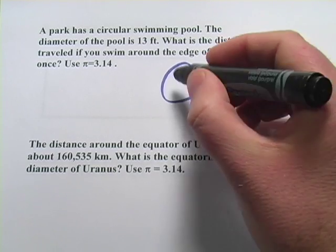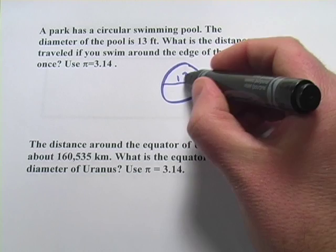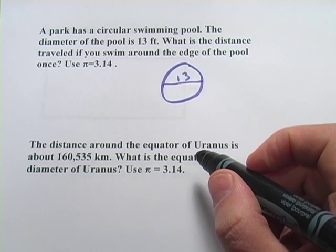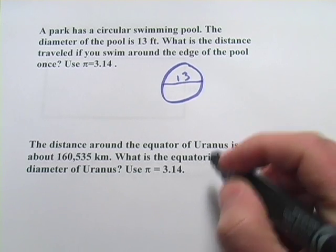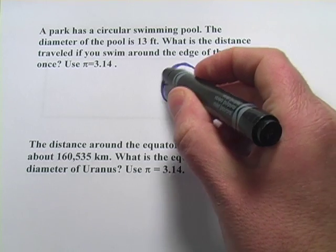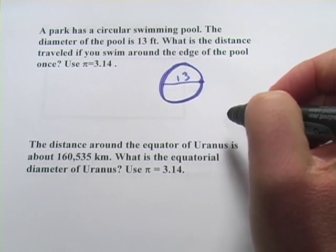The diameter of the pool is 13 feet. What is the distance traveled if you swim around the edge of the pool? So if you're right up against the edge of that pool and you go all the way around once, that's the circumference.